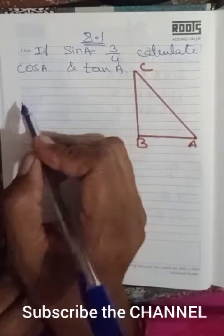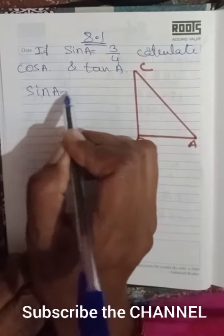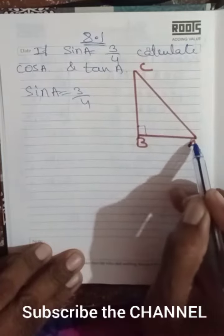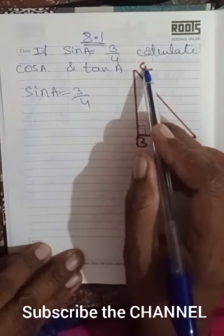You are given sine A equals 3/4. So this angle, other than the 90-degree angle, you have to label as A. Either here or here, but not at B. So A should not be the 90-degree angle - be careful with this.